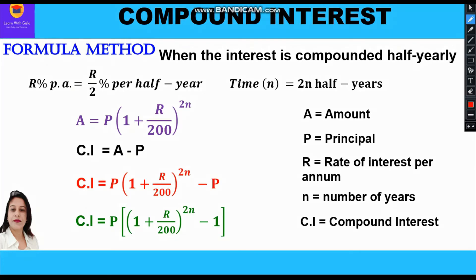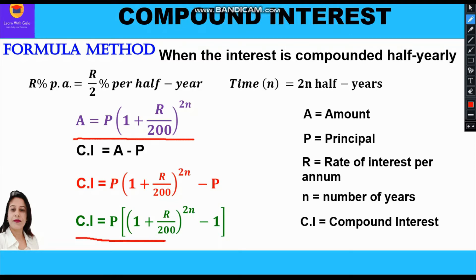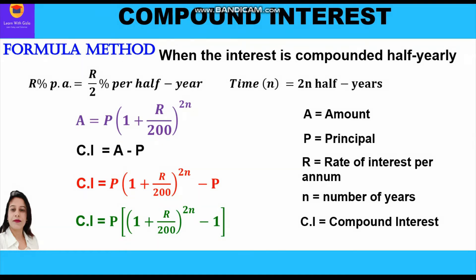When the interest is compounded half yearly, the rate percent per annum becomes r/2 percent per half year and time n becomes 2n half years. That means we divide the rate of interest by 2 and multiply time n by 2. So the formula of amount becomes A = P(1 + r/200)^(2n), and compound interest is CI = P[(1 + r/200)^(2n) − 1]. These are the formulas for interest compounded half yearly.